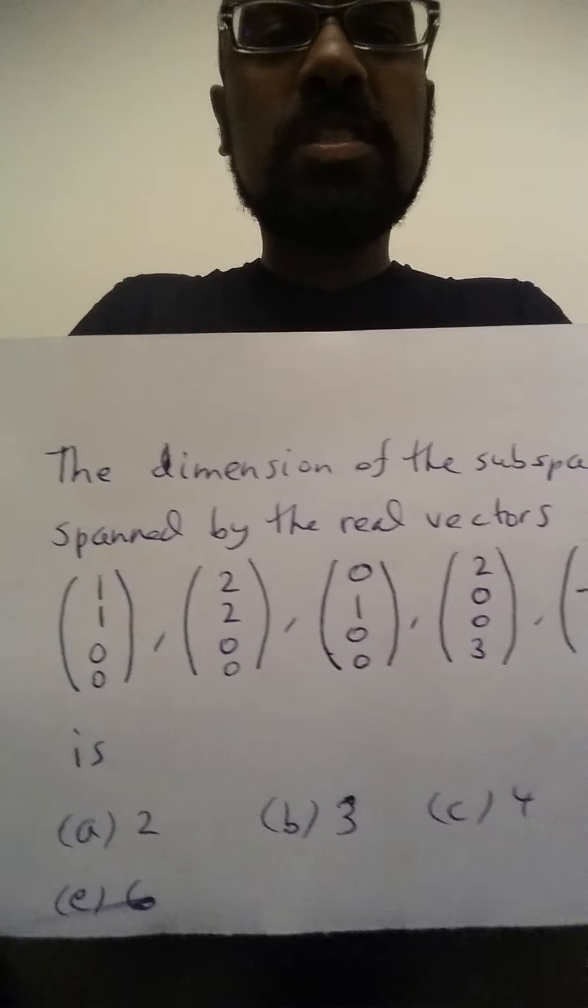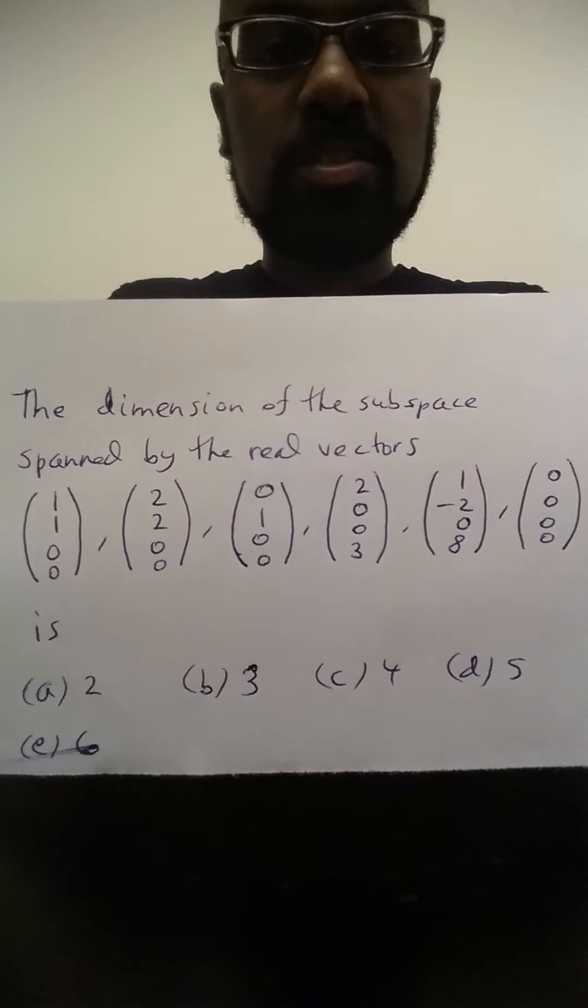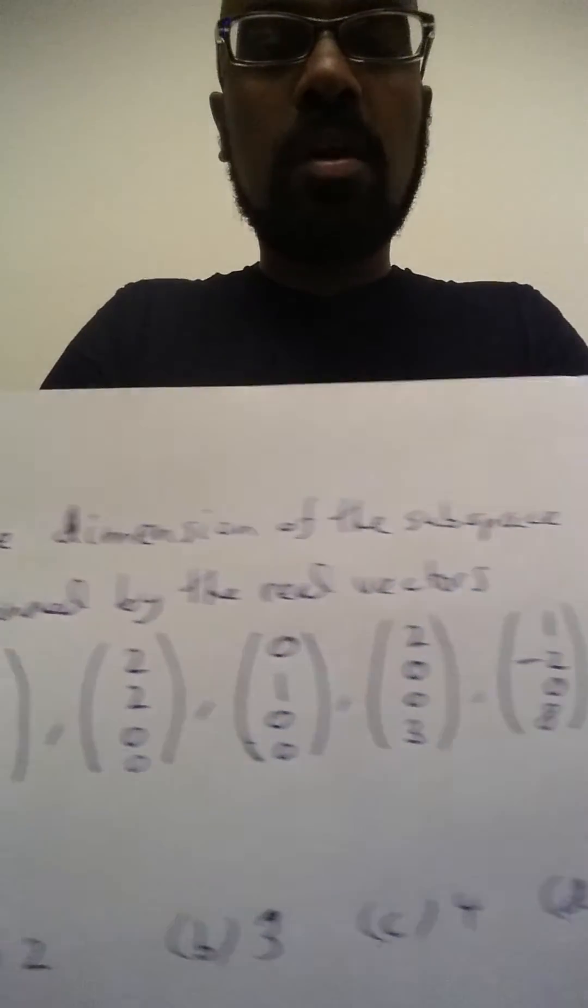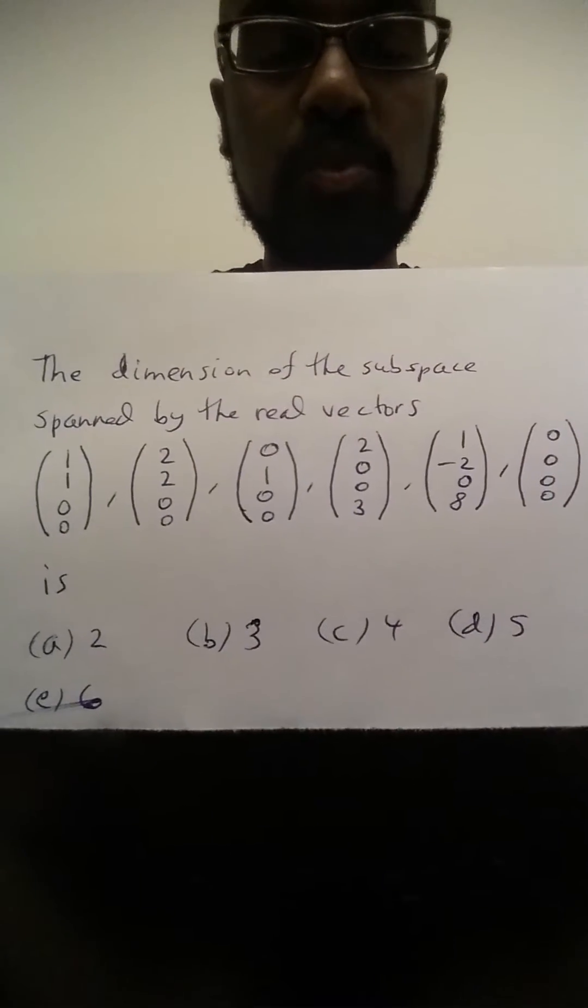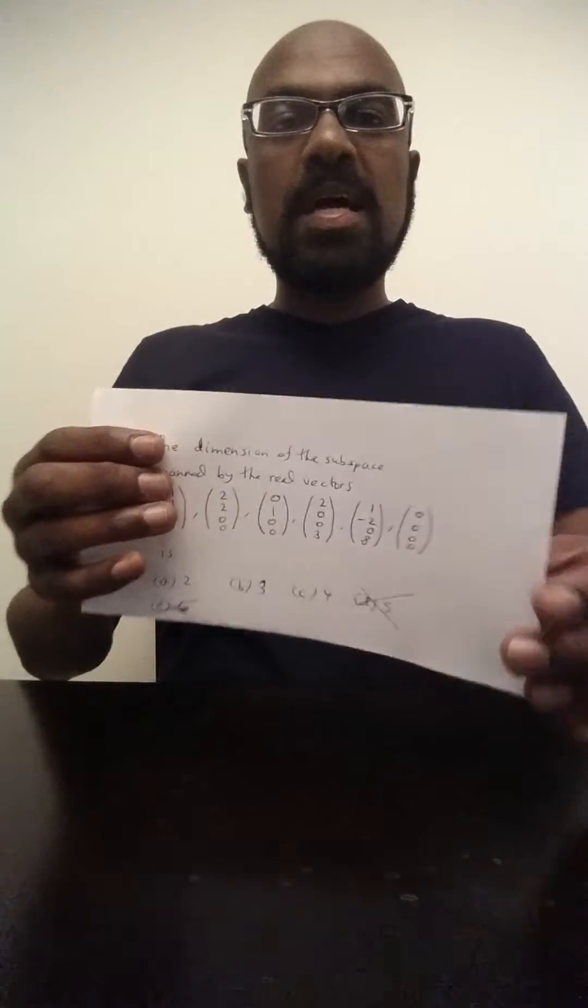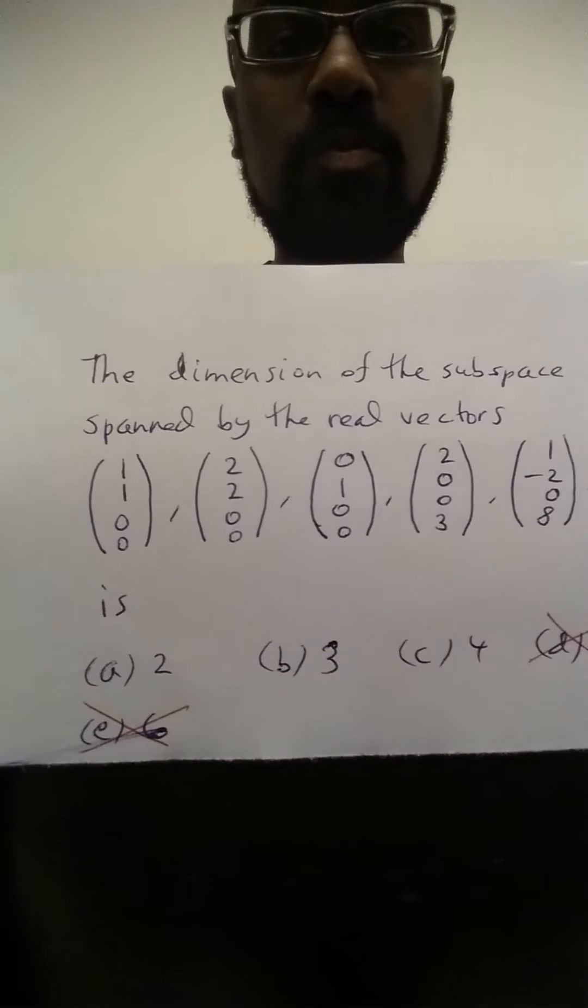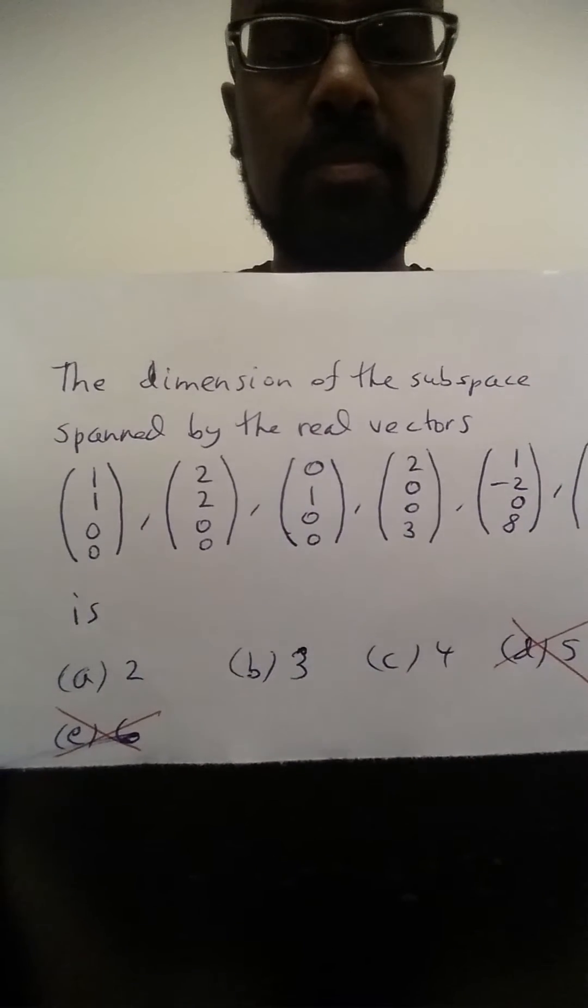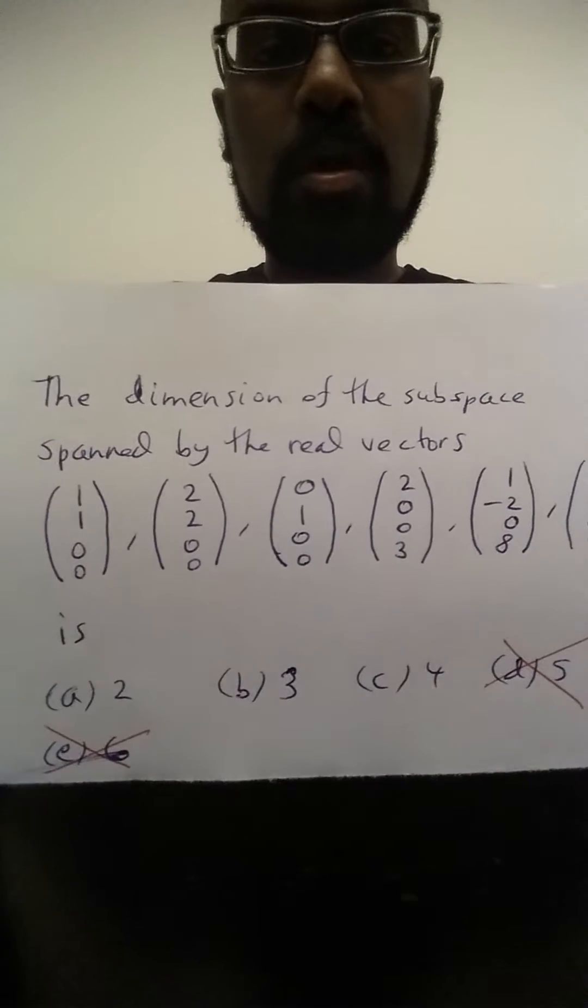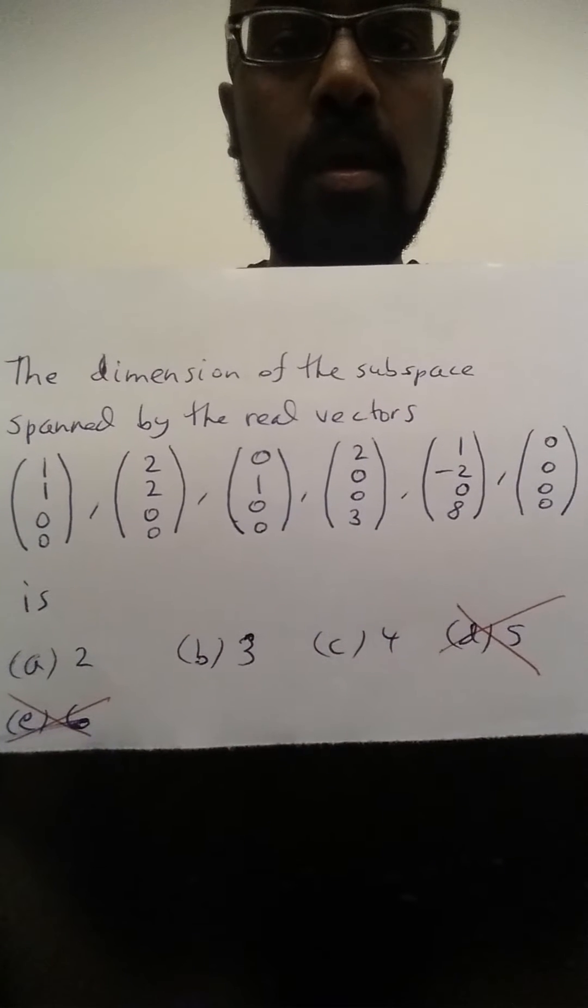Our goal is to find out what the dimension of the space spanned by these vectors is. So first of all, all these vectors live in R4, and so the dimension of this space is at most 4. So we can immediately eliminate the choices 5 and 6. That's great because when you're on the test, eliminating answers can give you more of an educated guess because you are limiting the number of choices that you have to choose from.